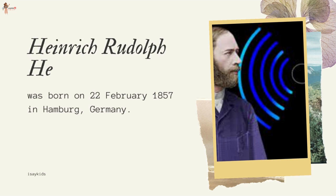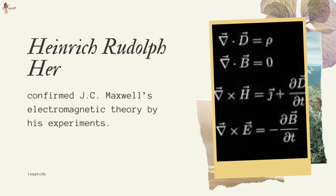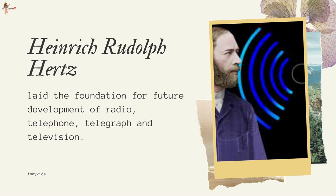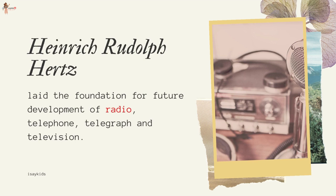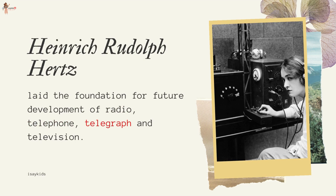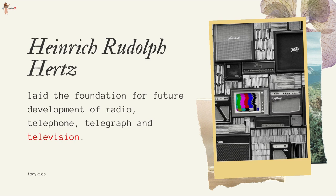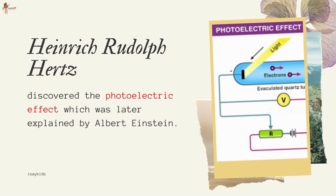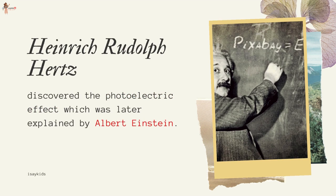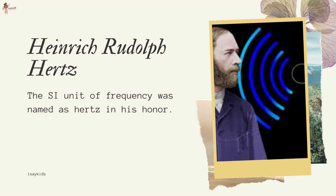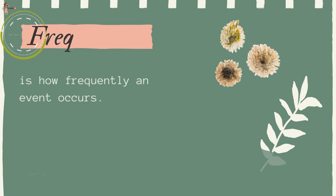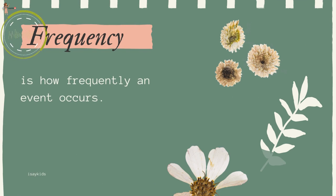Heinrich Rudolf Hertz was born on 22nd February 1857 in Hamburg, Germany, and educated at the University of Berlin. He confirmed J.C. Maxwell's electromagnetic theory through experiments and laid the foundation for future development of radio, radio telephone, telegraph, and television. He also discovered the photoelectric effect, which was later explained by Albert Einstein. The SI unit of frequency was named hertz in his honor.